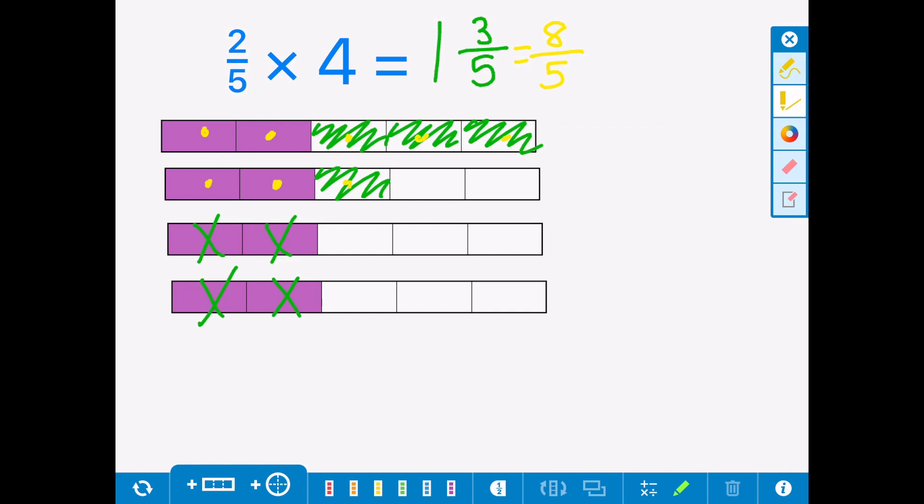So if we were to do this using just a written method, we would do 2/5 × 4/1, because 4 is equivalent to 4 wholes, so 4/1.